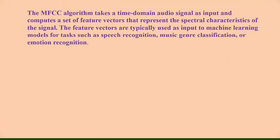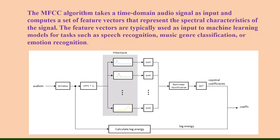Feature extraction. In the feature extraction stage, we computed MFCC features from the pre-processed lung sounds, which represent the spectral characteristics of the signal. The MFCC algorithm computes features in five stages: it takes the audio signal as input, applies Fast Fourier Transform to extract frequency information, applies a range of filter banks to map frequencies to the Mel scale and creates a Mel spectrogram, applies non-linear rectifications such as logarithm, and finally applies Discrete Cosine Transform to calculate the final spectral coefficients.